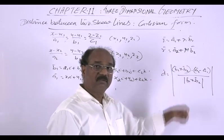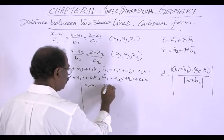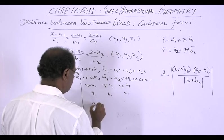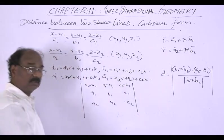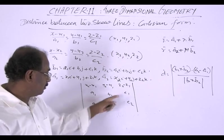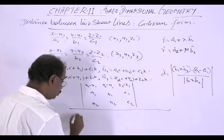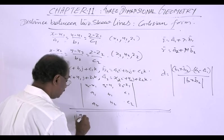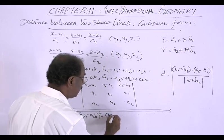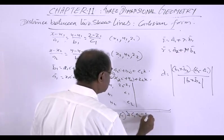Substituting this, we can see that this numerator is equal to the determinant: x2 minus x1, y2 minus y1, z2 minus z1, a1, b1, c1, a2, b2, c2. And this denominator, the modulus of this v1 cross v2, is equal to square root of a1 b2 minus a2 b1 all squared plus b1 c2 minus b2 c1 all squared plus c1 a2 minus c2 a1 all squared.